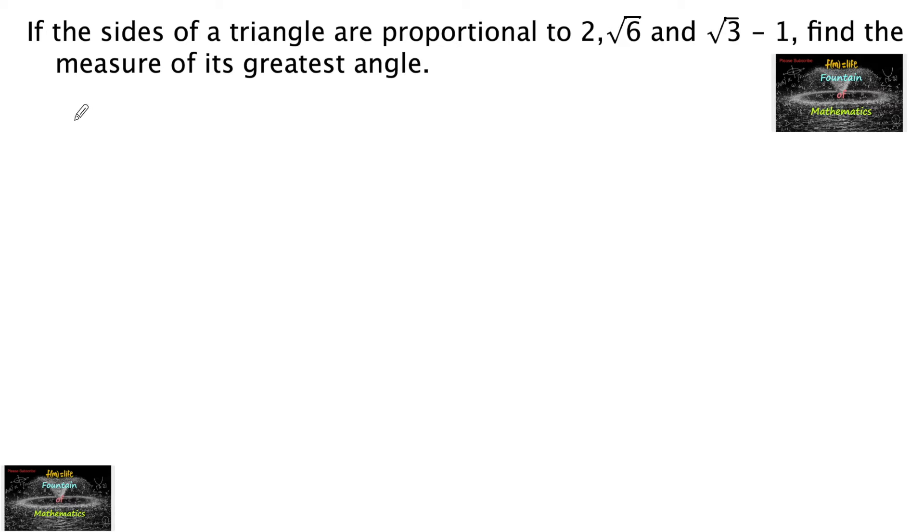So here it is given: if a, b, c are the sides of a triangle, a upon 2 equals b upon root 6 equals c upon root 3 minus 1. They are proportional.